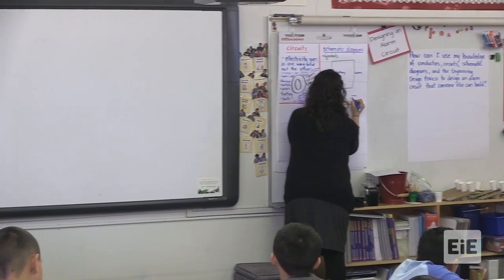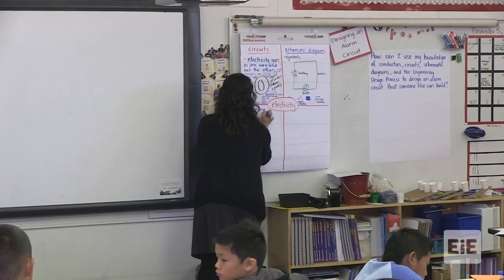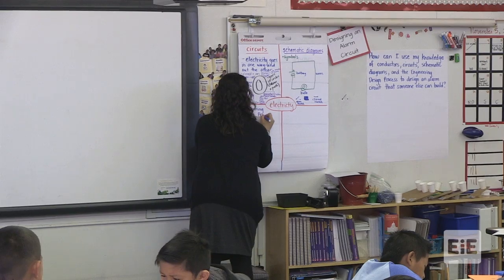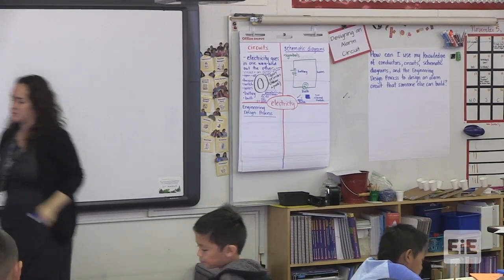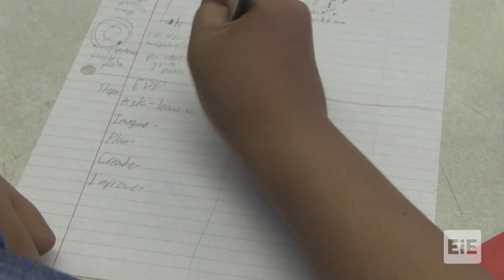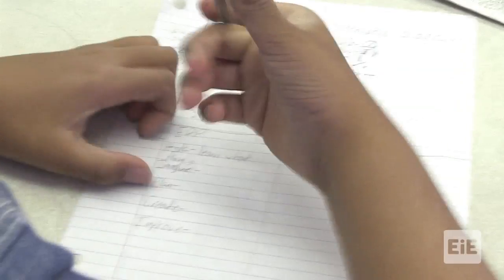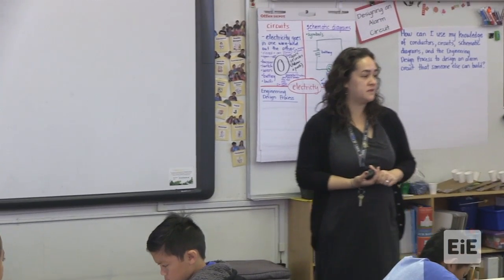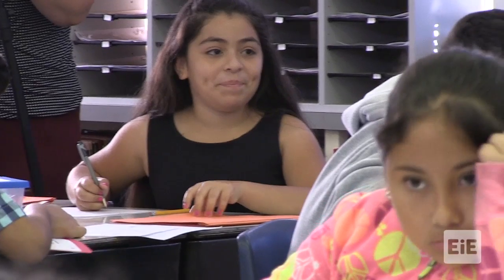The next square: the engineering design process. One minute for anything you remember about that. This time I saw a lot of people — there were some people who were drawing pictures of people working together, and there were some people who were making a list of the different steps in the engineering design process. Okay, final one.